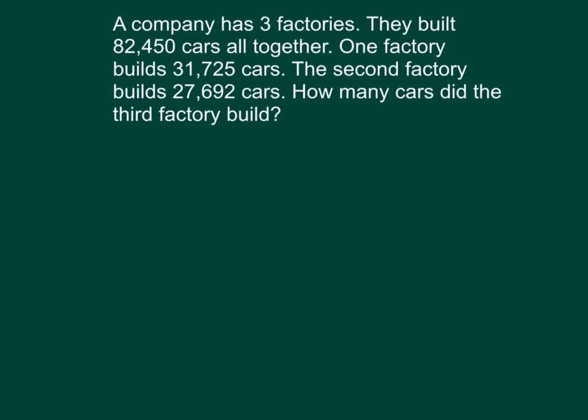Go ahead and read with me. A company has three factories. They built 82,450 cars altogether. One factory builds 31,725 cars. The second factory builds 27,692 cars. How many cars did the third factory build?